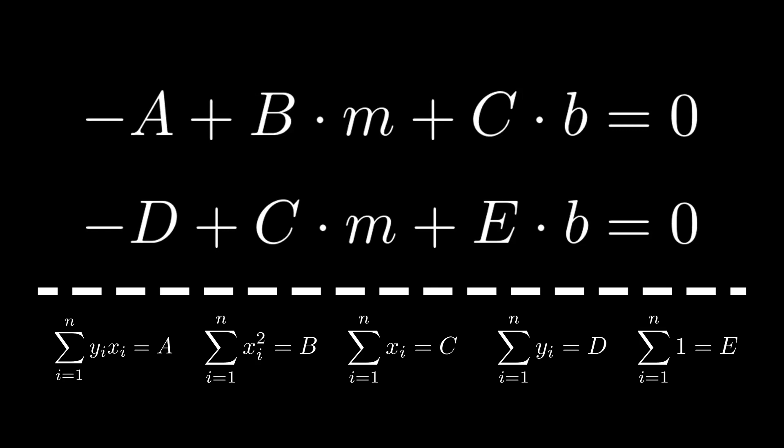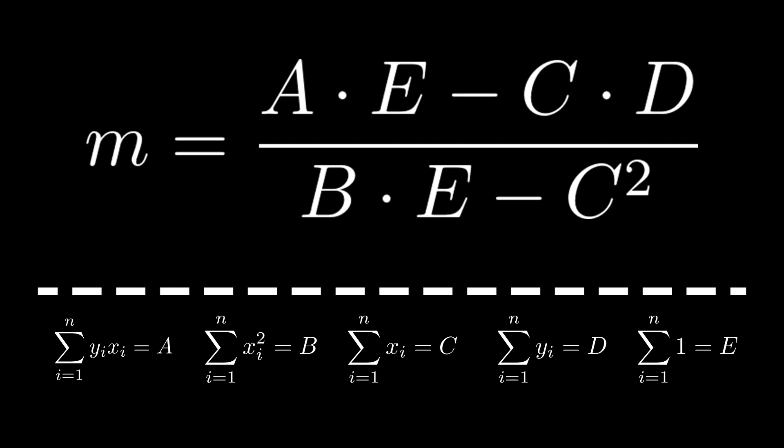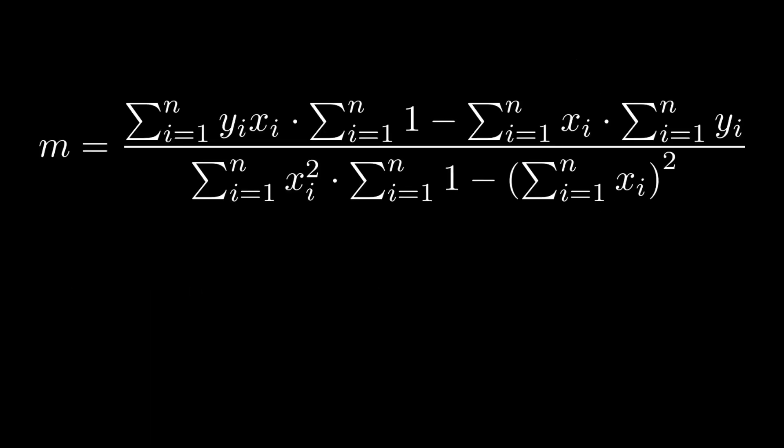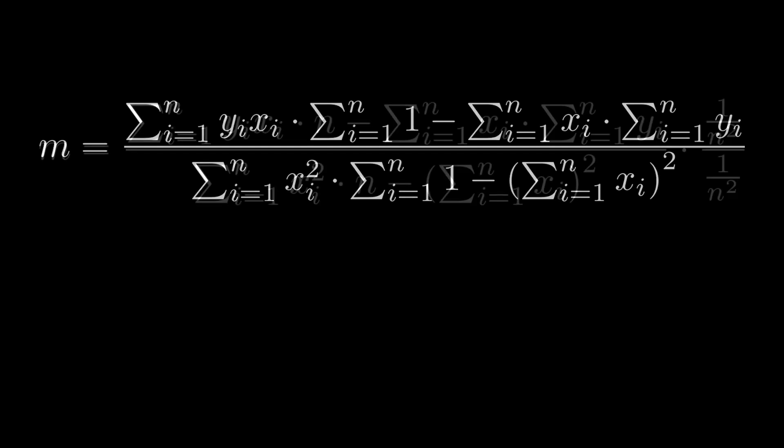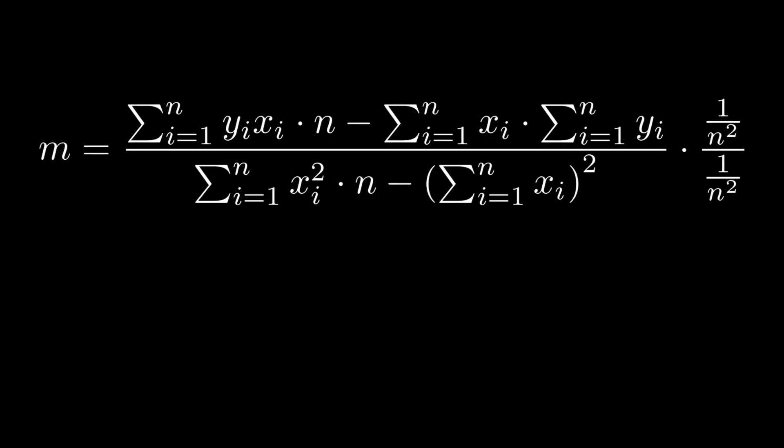Let's first divide everything by two. Now we have a fairly simple set of linear equations. Feel free to solve this yourself, because again, it's just a bunch of tedious algebra. The solution for the slope should be (a × e − c × d) / (b × e − c²). We can then insert the summations back. Looking at the summation of one: if we add one n times, the summation will just equal n, so let's replace it with n. I also want to divide the top and bottom by n² — you'll see why shortly.